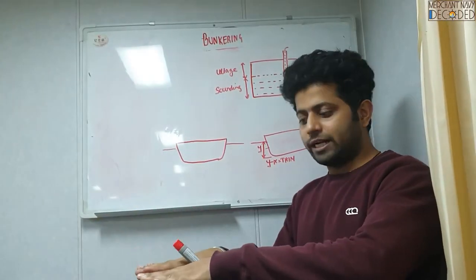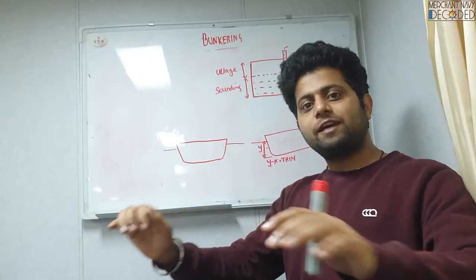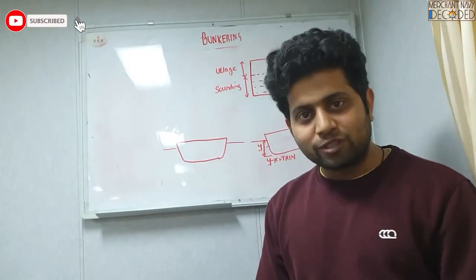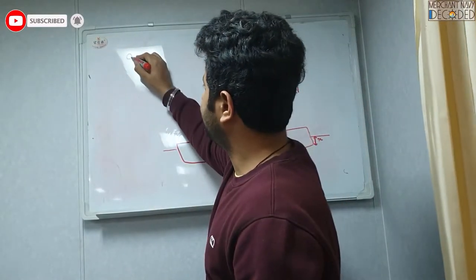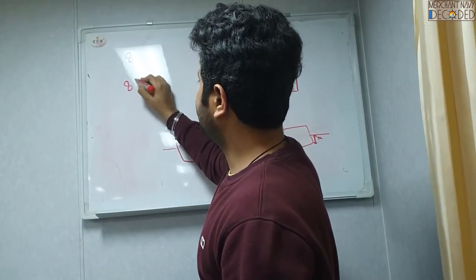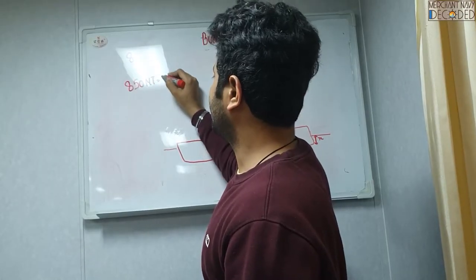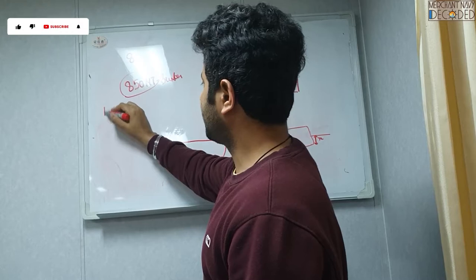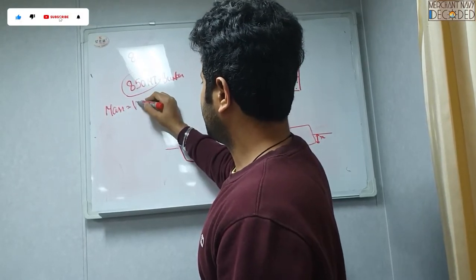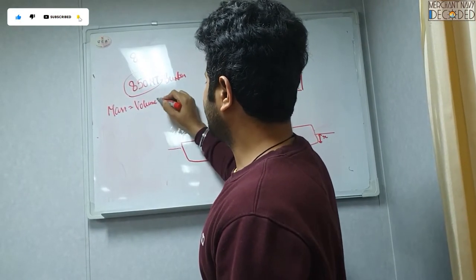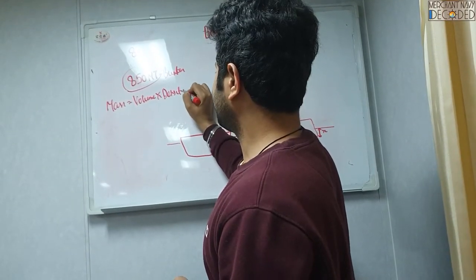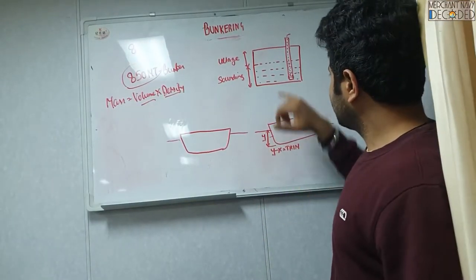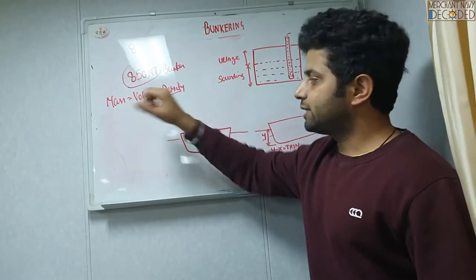The ship came alongside. 850 metric tons bunker barge said, okay we have taken 850 metric tons of bunker. Now it is your job to tell whether it is 850 metric tons or not. 850 metric tons of bunker is needed. So when you have got the mass, what you need is volume and you need to multiply it by density. Now first thing, let us keep it aside.